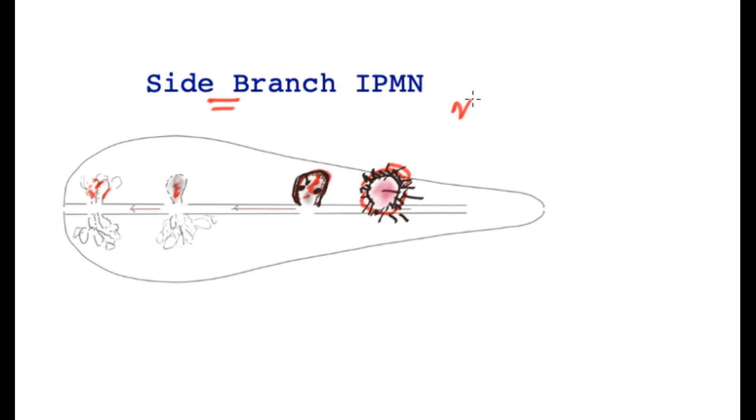These two variants, the main duct and the side branch may coexist in the same patient as well.